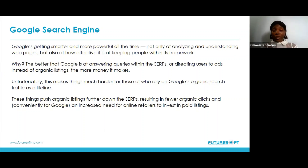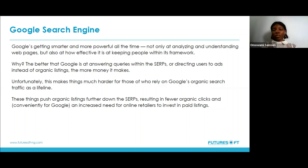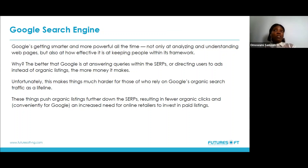Google is getting smarter and more powerful all the time — not only at analyzing web pages but also at keeping people within its framework. It's more about human elements and giving value, because when people come to a search engine they want answers. You need to understand that even though Google is doing all of this, it is also trying to make money, so Google often prioritizes ads, which makes it tougher to rank organically. But you can still rank organically if you get all SEO best practices right.